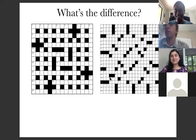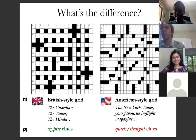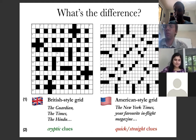Those are grid designs. The one on the left is the British style grid that you would see frequently in British newspapers such as the Guardian, the Times, or even Commonwealth newspapers such as The Hindu in India. On the right is an American style grid that you would see in the New York Times or in your favorite in-flight magazine.